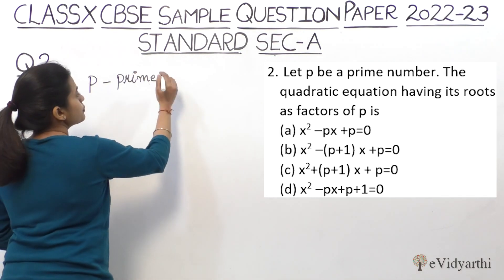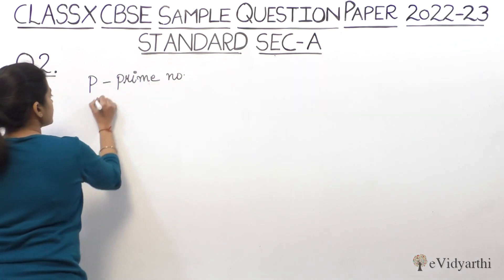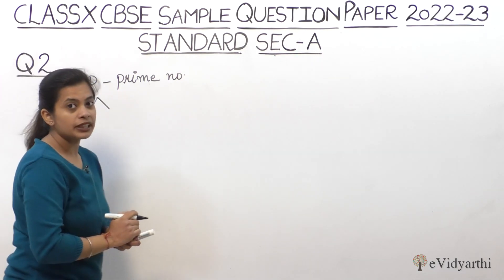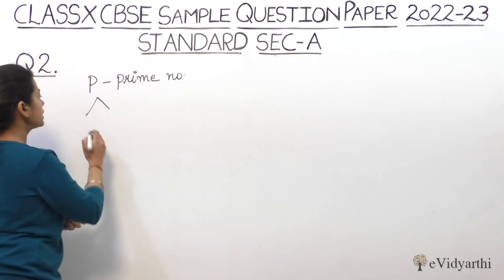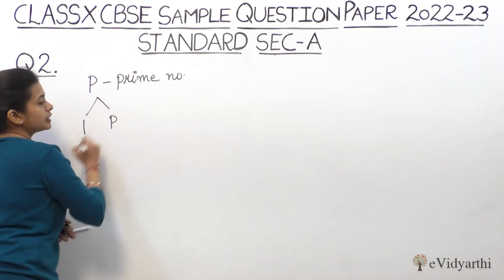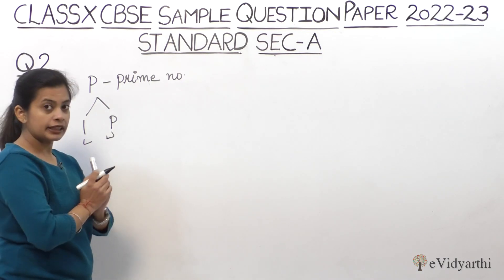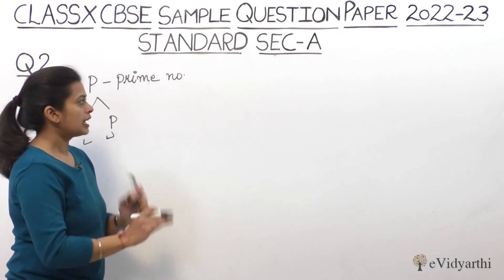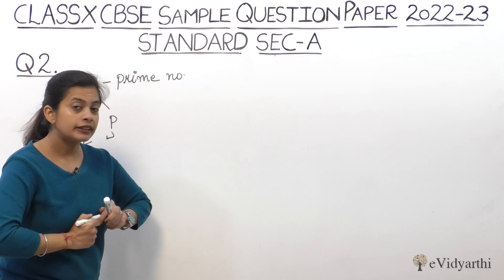The advantage of a prime number is that the two factors of a prime number are always 1 and p itself. So the factors are 1 and p - these are the roots of our equation.